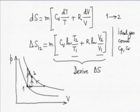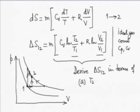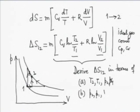Homework: derive ΔS₁₂ in terms of (case A) T₂/T₁ and P₂/P₁, and (case B) P₂/P₁ and V₂/V₁, in addition to the T₂/T₁ and V₂/V₁ form already derived. That is the recommended homework.